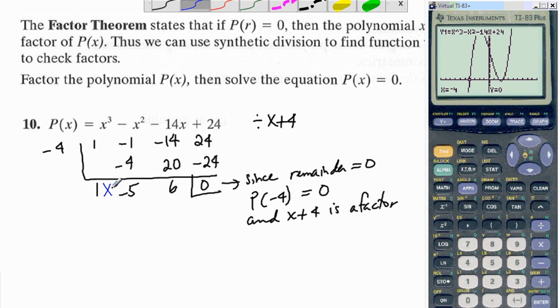So we now find the remaining factors by factoring the quotient, which is x-squared minus 5x plus 6.